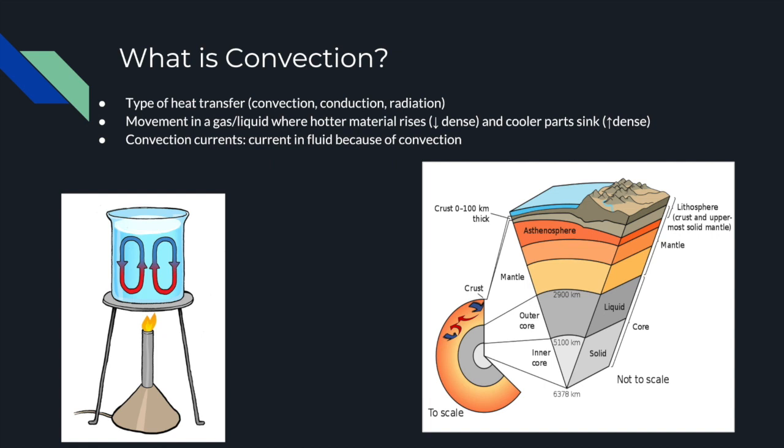Convection is the movement in a gas or liquid where hotter material rises, because it's less dense, and cooler parts sink, because it's more dense. Convection currents are currents that occur in fluid because of convection. So now we're going to look at examples of convection currents and understand how convection works.